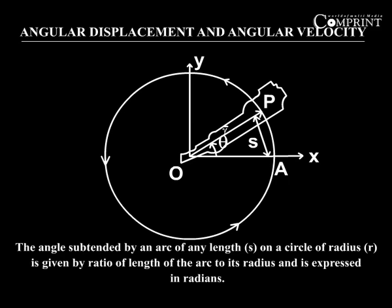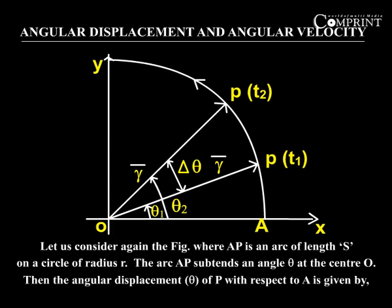The angle subtended by an arc of any length s on a circle of radius r is given by the ratio of the length of the arc to its radius, and it is expressed in radians. Let us consider the figure where AP is an arc of length s on a circle of radius r. The arc AP subtends an angle theta at the center O.